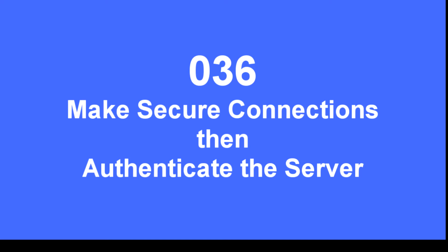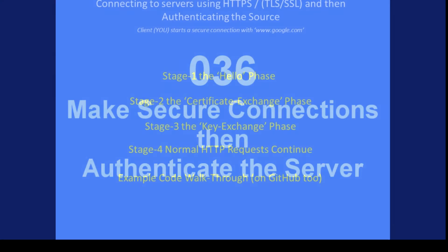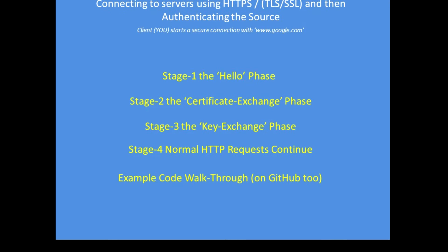Following Tech Note 32, I've had a number of requests via email to explain how to authenticate a secure socket layer connection to a server. Before I go through a worked example using a code walkthrough, I'll set out the three, perhaps four stages required: first, the hello phase; second, the certificate exchange phase; third, exchanging keys; and fourth, where the actual data exchange takes place.